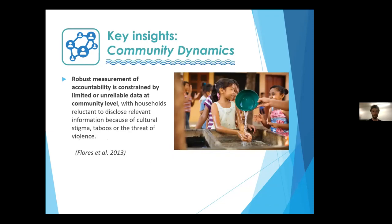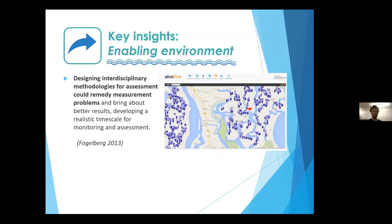A second point around community dynamics: there can be significant challenges measuring interventions because robust measurement of accountability is often constrained by limited or unreliable data at community level. A paper by Flores et al. from 2013 highlighted how there was often reluctance from certain households in poor rural areas to disclose relevant information, due to cultural stigma, cultural taboos, or even a threat of violence when reporting poor governance — especially relating to corruption within the local state. This lack of reliable data hindered efforts to measure how accountability interventions and governance processes were performing.